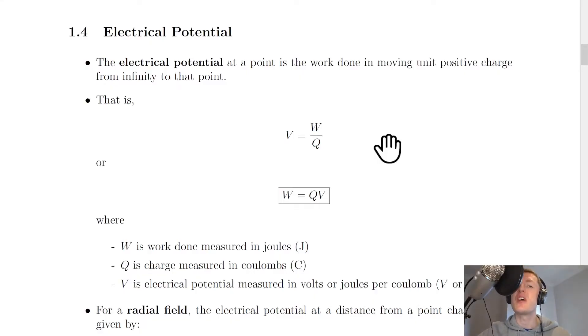We'll start with the definition of electrical potential, which is a common one that you could be asked to state in an exam. It says the electrical potential at a point is the work done in moving unit positive charge from infinity to that point. And to help you visualize this definition, here's a little simulation.